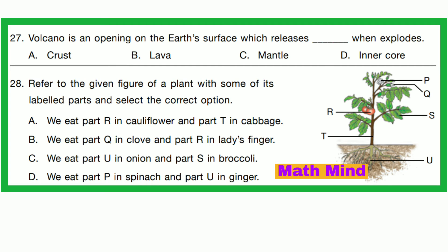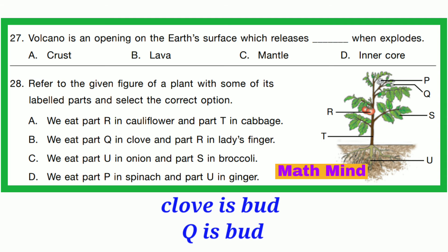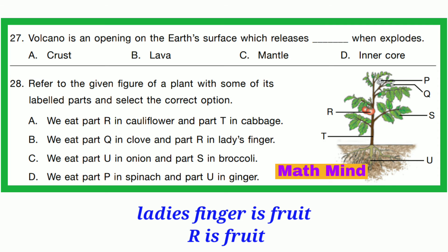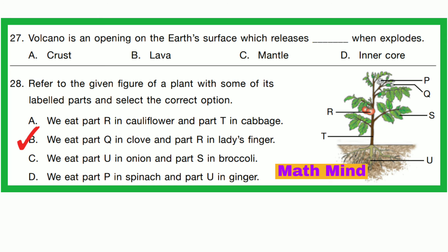Question number 28. Refer to the given figure of a plant with some of its labeled parts and select the correct option. Here T is stem, R is fruit, S is leaf, Q is bud, and P is flower. Regarding the options, in option B it is written: we eat part Q in clove and part R in lady's finger. Clearly, clove is a bud, and here Q is also bud. R is lady's finger, and lady's finger is a fruit; here R is also fruit. So option B is correct.